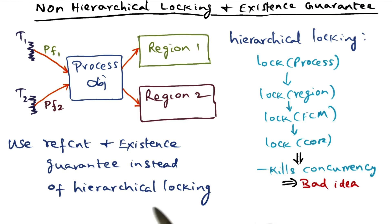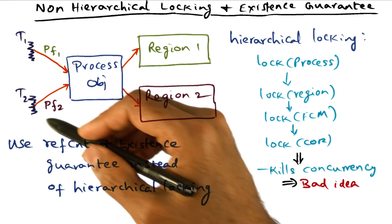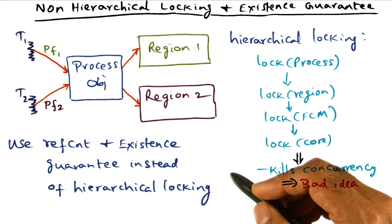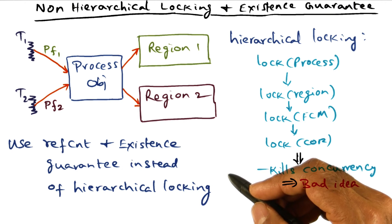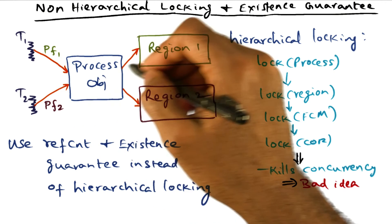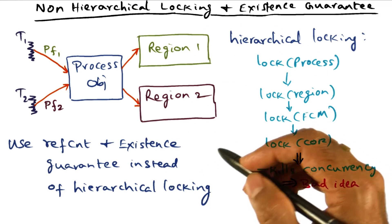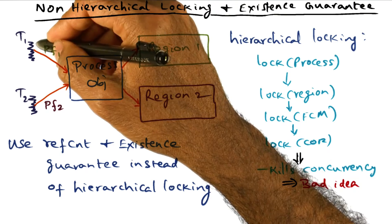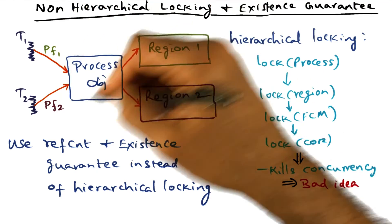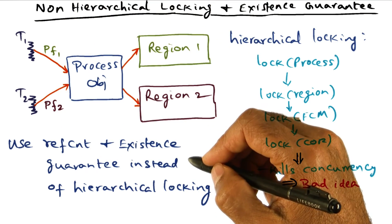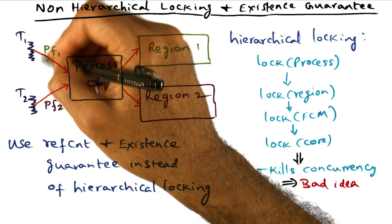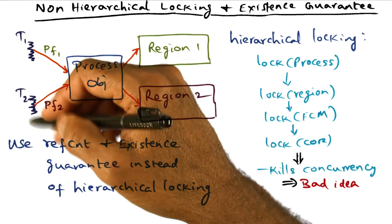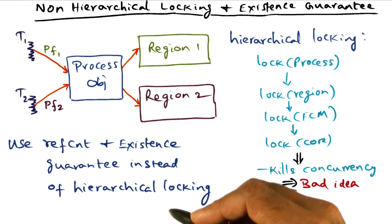This allows us to get rid of hierarchical locking and promote concurrency for service activities provided by the operating system — in this case, page fault service that can happen in parallel for independent regions of the address space, touched by threads running on the same processor but executing on different cores.